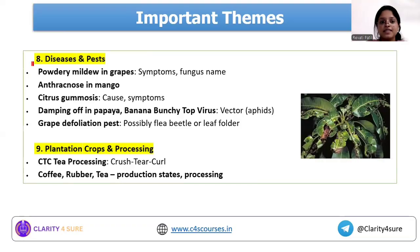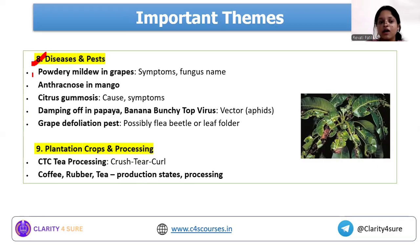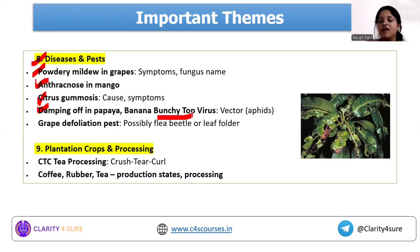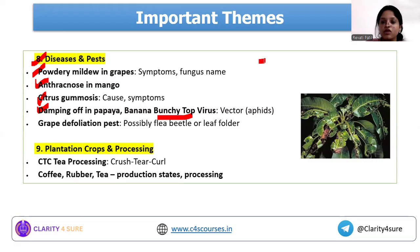For diseases and pests, you need to know the basic prevalent diseases in each major crop. Examples that appeared include powdery mildew and anthracnose in mango, citrus gummosis, damping off in papaya, and questions on which vector transmits a particular virus. These types of questions were commonly asked before 2022.